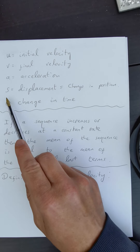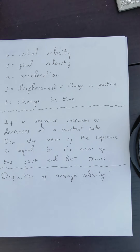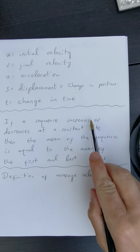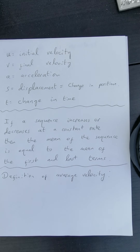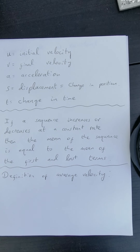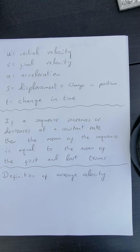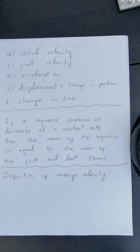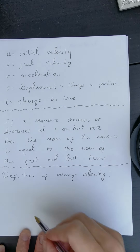You'll often see Delta T for change in time as well. A couple of other things to know before we derive these — from the last worksheet — is that if a sequence increases or decreases at a constant rate, then the mean of the sequence is equal to the mean of the first and last terms. So in an arithmetic or linear sequence, to find the mean of the whole sequence, you only need to find the mean of the first and last terms.